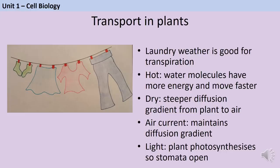The best conditions for transpiration are what you'd think of as good laundry weather: hot, dry, light, and with lots of air movement. When it's warm, water molecules have more energy and evaporate more quickly. When it's dry outside there's a steeper concentration gradient from the water in the leaf to the dry air. Wind moves water away from the plant, maintaining the concentration gradient so water keeps moving out. When it's light, the plant does more photosynthesis and keeps its stomata open to get carbon dioxide in, but this also means water can move out through transpiration.